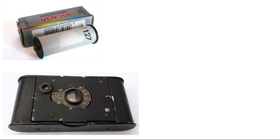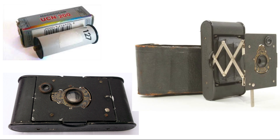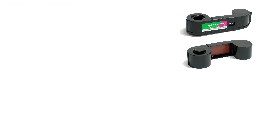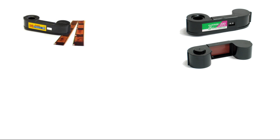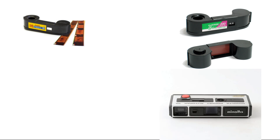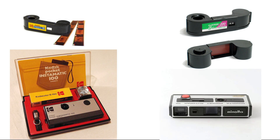127 was introduced in 1912 alongside the Vest Pocket Kodak folding camera. It's slightly smaller than 120 and slightly larger than 35mm, putting it between 35mm and medium format cameras. Then there's 110 — roughly half the size of 35mm at 17x13mm — introduced in 1972 in response to consumer complaints about loading traditional roll films. It is still in use today and is well known for the grainy, unsharp images commonly found in 1980s photo albums.